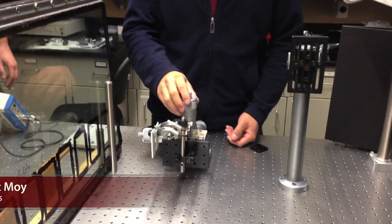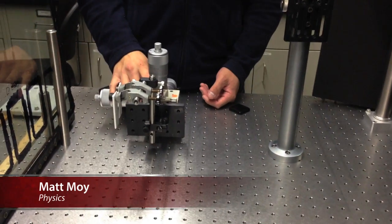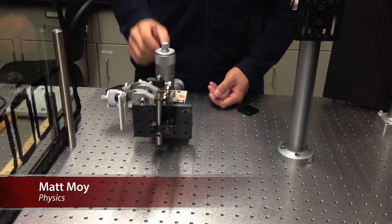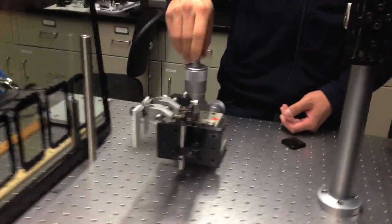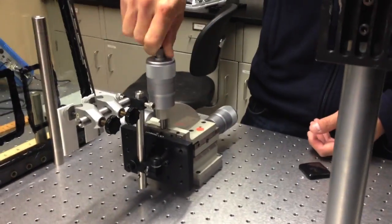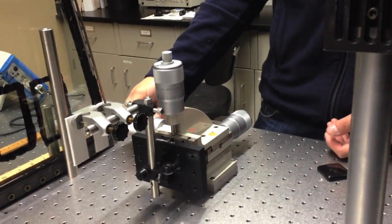This is the testing setup we use. It's devised on a three-point axis system. These knobs allow us to move left and right, top to bottom, and back and forward.